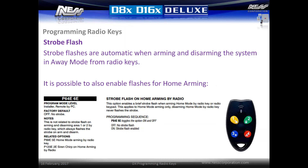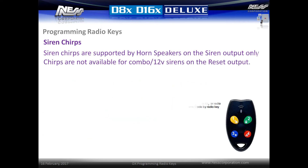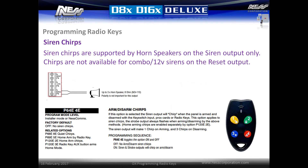Strobe flashes are automatic when arming and disarming the system in away mode from radio keys. It is also possible to enable flashes for home arming from radio keys — enable option p64e 6e to enable strobe flashes on home arming by radio key. Siren chirps are supported by horn speakers on the siren output only; chirps are not available for combination 12-volt sirens on the reset output. To enable siren chirps, activate option p64e 4e. The system will chirp once when arming and three times when disarming from a radio key.